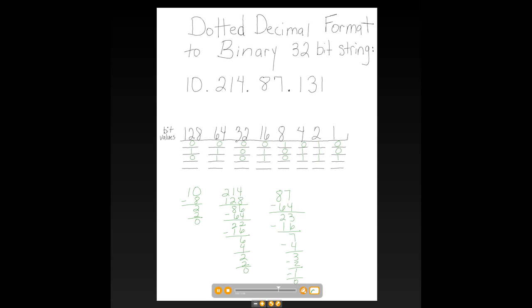And the last one is 131. 128 is turned on. If we subtract 128 from 131, that leaves us 3. We already know 2 plus 1 is 3. We turn the last two bits on. We turn all the others off. We have successfully converted our dotted decimal format back into a binary 32-bit string.